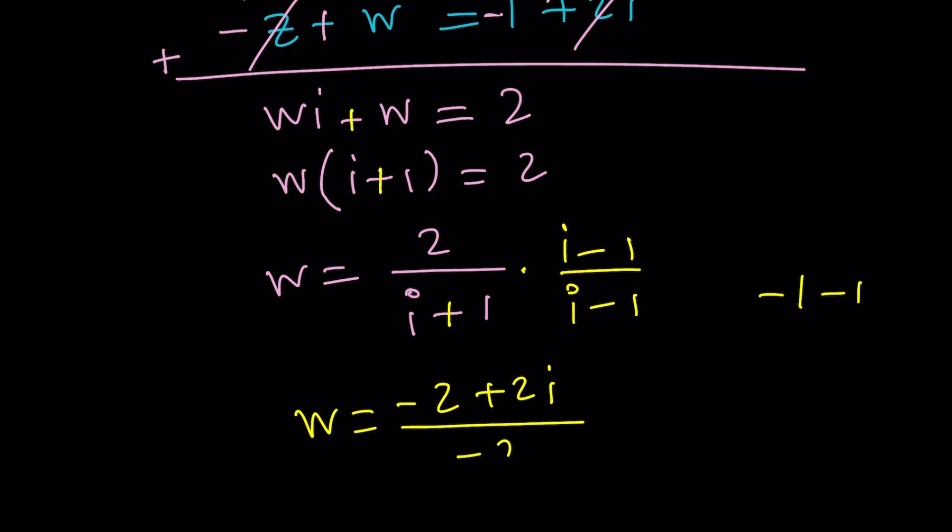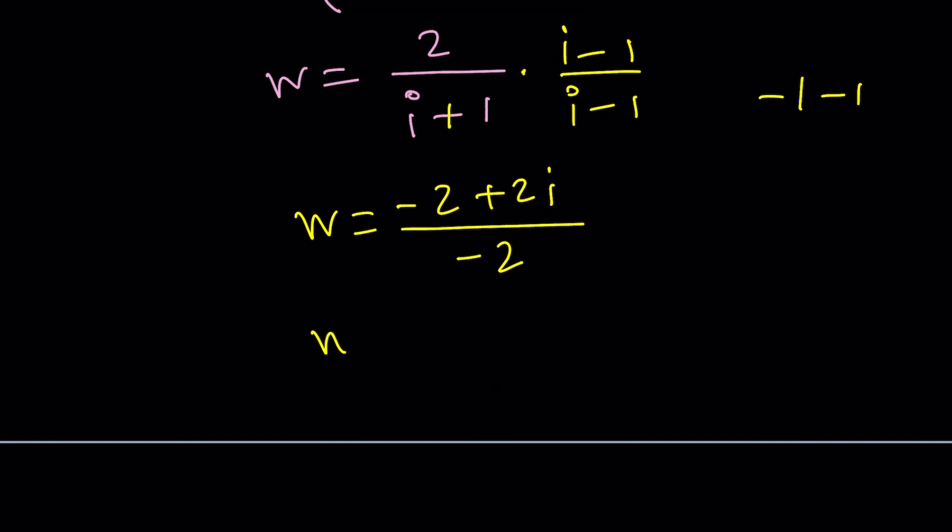And when you divide by negative 2, you're going to get 1 minus i. Make sense? Okay. So W is 1 minus i.